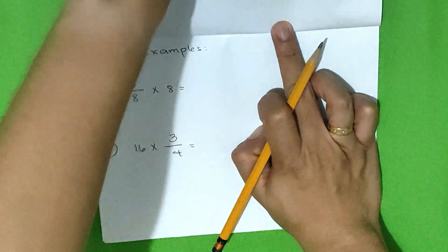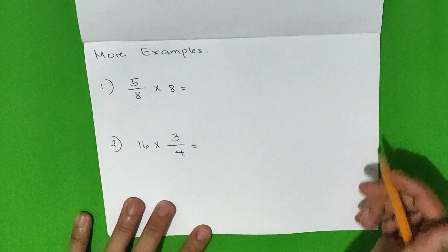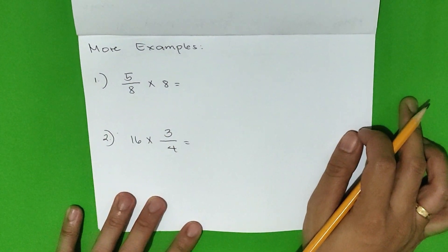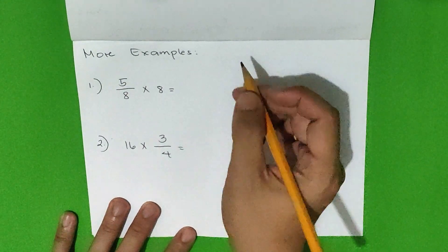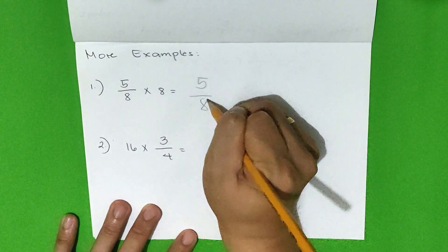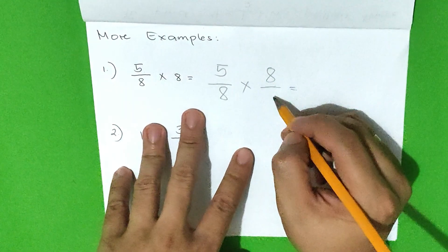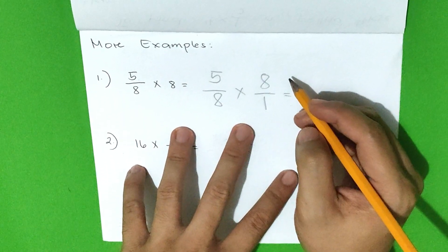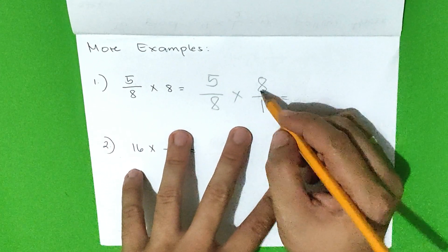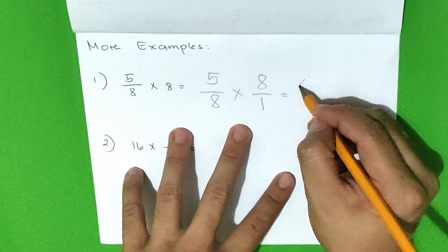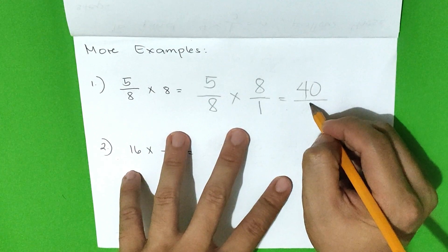Let's have more examples. The first step is to write the whole number as a fraction with a denominator of 1. Let's copy 5/8 times 8. Rename the whole number 8 with a denominator of 1. The second step is to multiply the numerators and multiply the denominators. 5 times 8 is equal to 40. And 8 times 1 is equal to 8.